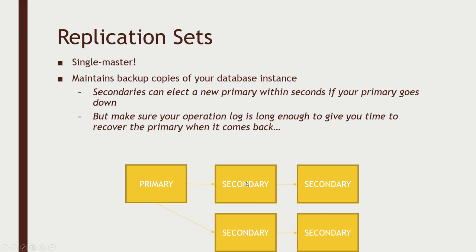MongoDB will automatically replicate operations to those secondaries so that if the primary goes down, one of these secondaries can take its place. The replication chain is somewhat arbitrary — it tries to figure out which server it can talk to most quickly based on ping times. If that primary goes down, a new secondary can be elected and take its place within seconds. You're not talking about massive downtime. But you do need to get that primary back up quickly, because if your operation log runs out of space during downtime, recovery becomes much more difficult.